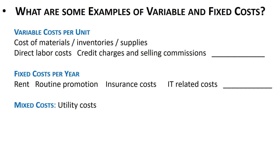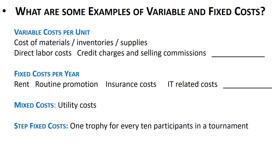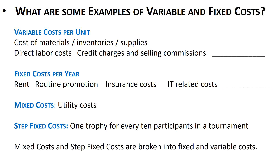Some costs are mixed — with a fixed portion and a variable portion — like a utility bill that has a flat fee plus a usage-based charge. There is also something called step fixed cost: for example, if you buy one trophy for every ten tournament participants, the cost is $18 for up to ten participants, then $36 for 11–20, then $54 for 21–30. In both cases — mixed or step fixed — you break them into a fixed and a variable portion, placing each with the respective cost category.